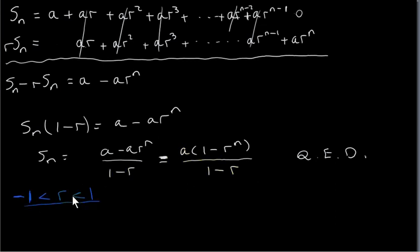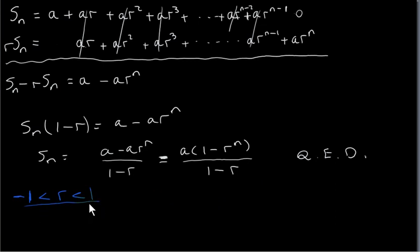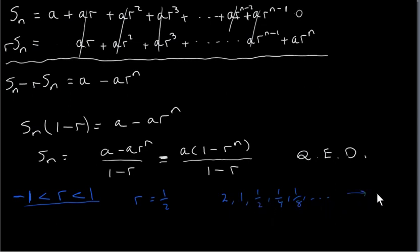Now I want to look at the situation where r is a number between minus 1 and plus 1 — for example, r could equal minus 3 quarters, plus a half, or plus 7 eighths. We saw earlier that if that's the case then we have a decreasing sequence. For example, if r equals a half we might have a sequence like 2, 1, a half — we can see that this is decreasing, and the terms are approaching 0. That always happens when r is any number between minus 1 and plus 1.